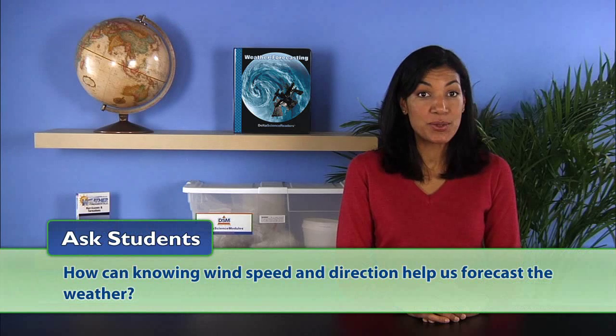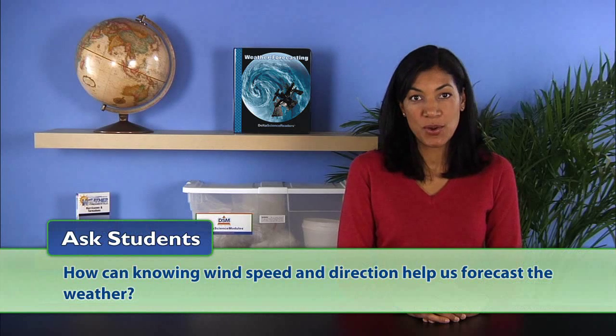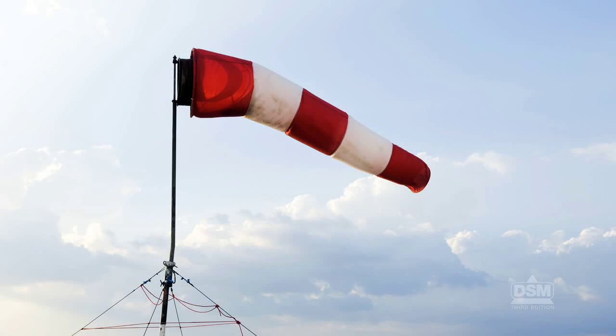Now ask, how can knowing wind speed and direction help us forecast the weather? Storms are usually preceded by a change in wind speed. Knowing the wind speed also tells us how strong a storm will be. Knowing where the wind is coming from allows us to determine in which direction it is moving. Measuring these changes allows us to predict the approach of another storm when similar changes occur.